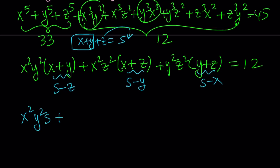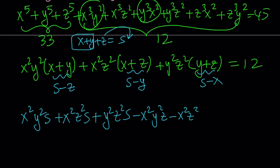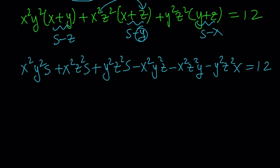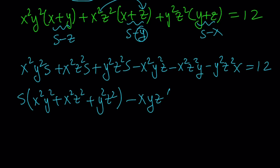I get x squared y squared times s plus x squared z squared times s plus y squared z squared times s — putting all the s terms together — and then the rest has a minus sign. The remaining terms look like x squared y squared z minus x squared z squared y plus y squared z squared x, giving only three terms. The first three terms factor out s, giving s times (x squared y squared plus x squared z squared plus y squared z squared). The remaining terms factor as minus xyz times (x plus y plus z), which is minus p times s. This equals 12. Our product p and sum s appear here, which is nice.